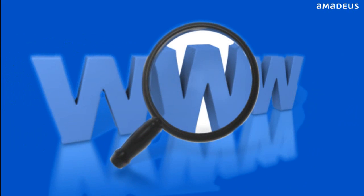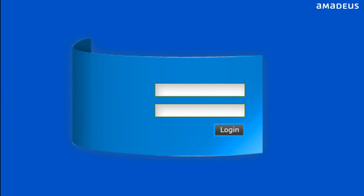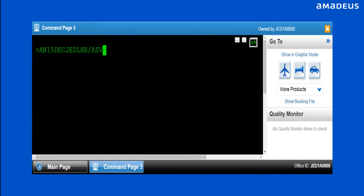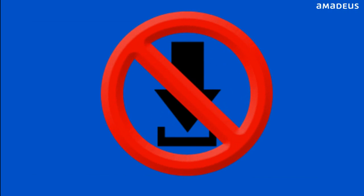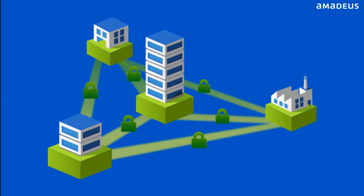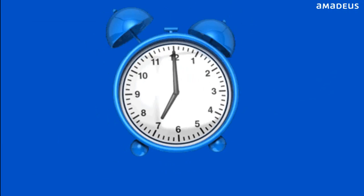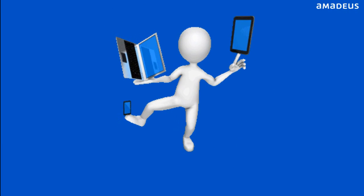Amadeus Selling Platform Connect is a fully web-based, login-based, portable, customizable reservations platform that also offers the ability to perform cryptic commands. Nothing is downloaded to the PC and no security certificate is used, so that users can access Amadeus Selling Platform Connect from anywhere, anytime. And it works on Apple Mac, PC or Tablet.